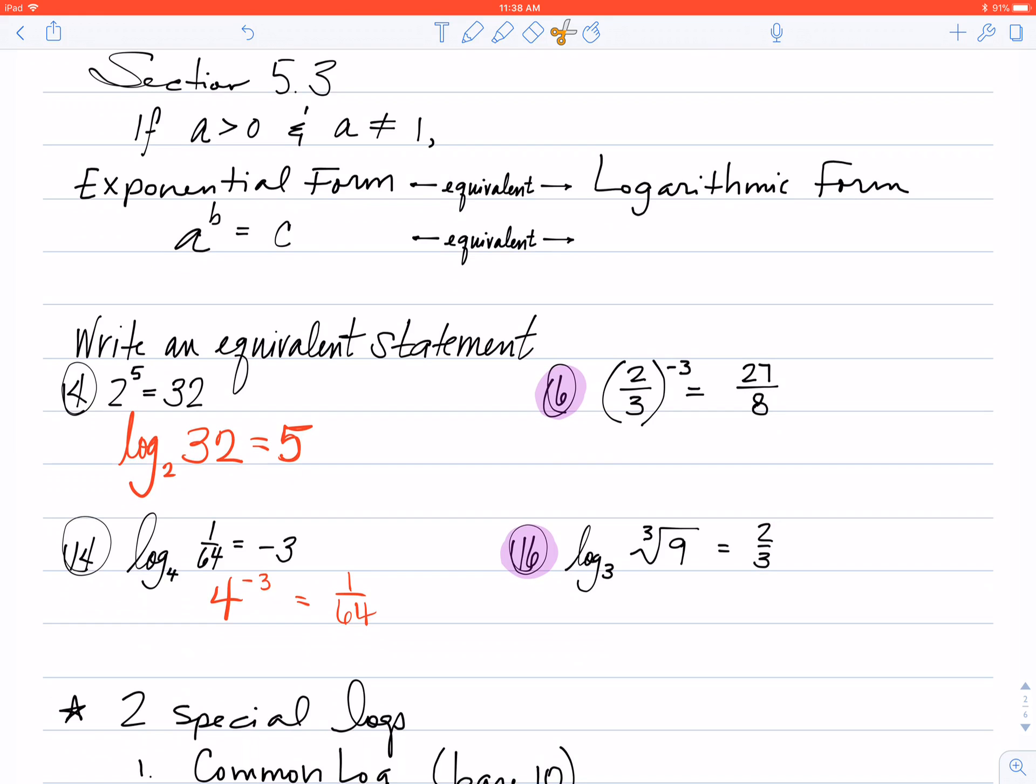So the first thing I have written for you is the exponential form: a raised to the b power equals some number c. If I want to rewrite this as a logarithm, then I'm going to use a capital L pattern. I'm going to come down and hit the a first, come over and hit the c next, and then finish up at the b.